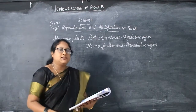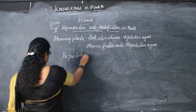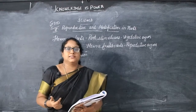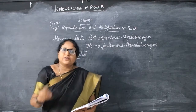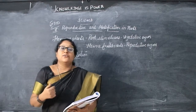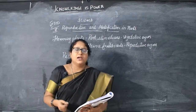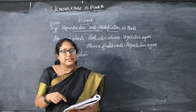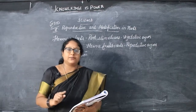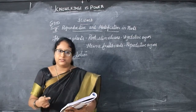What is reproduction? The process by which plants and animals produce young ones and increase their number is called reproduction. For example, drumstick can be grown from seeds or from stem cuttings.